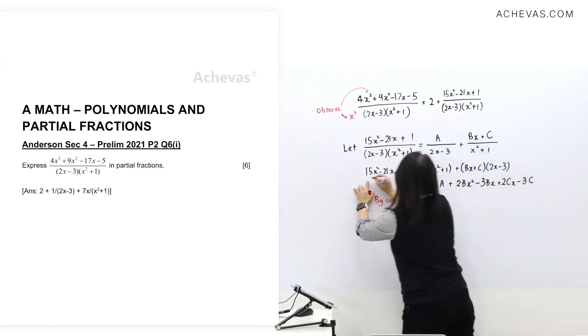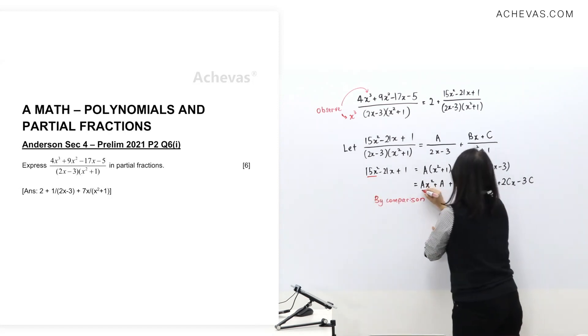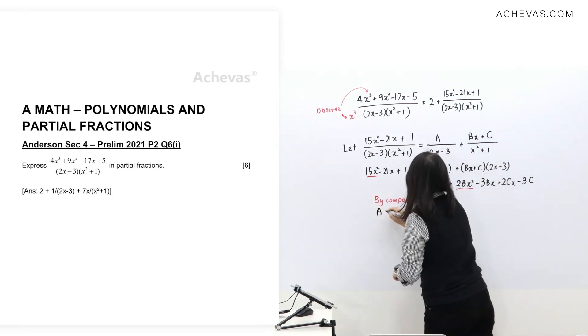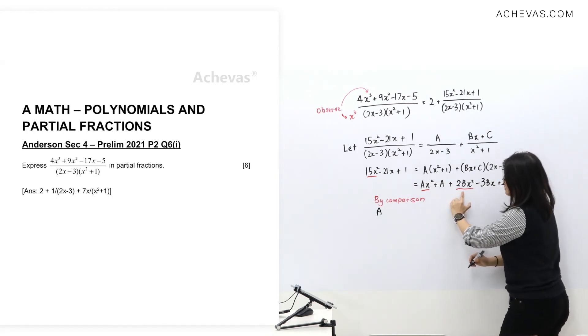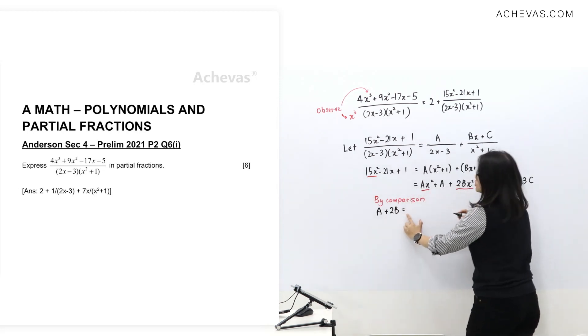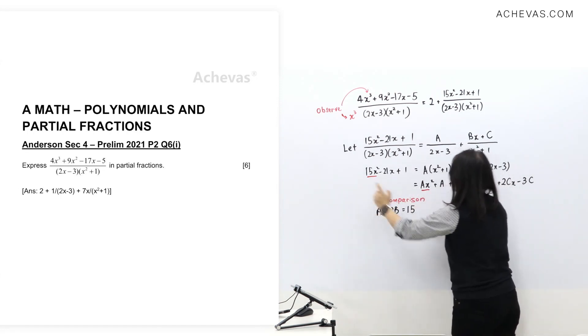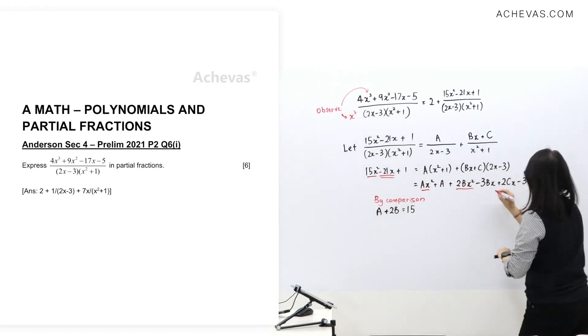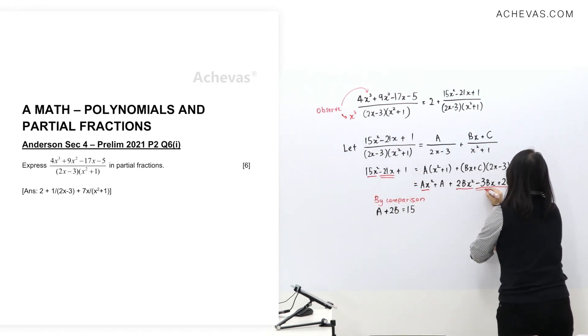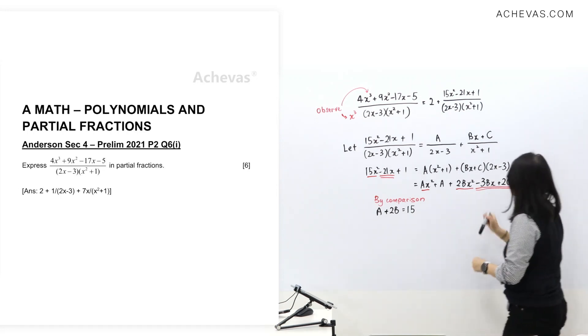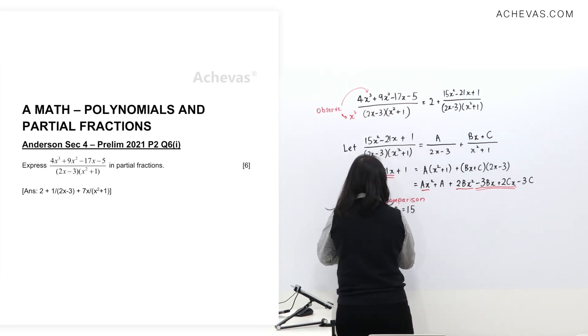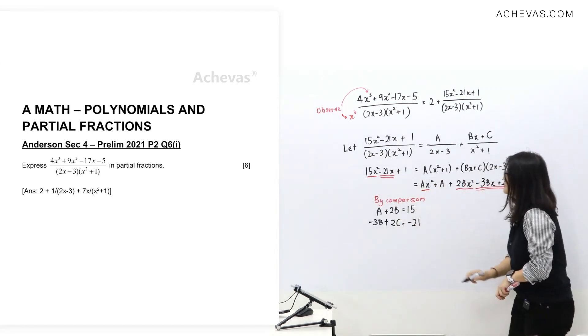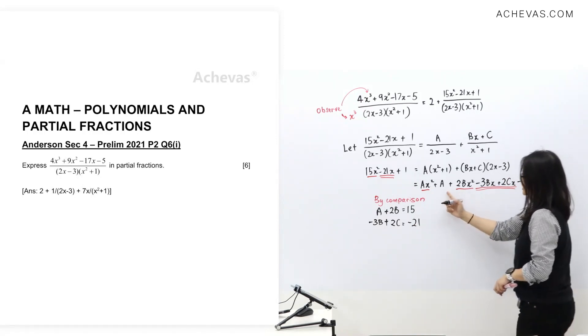Now we're ready to do comparison. We're going to compare x² terms. We have this one and this one. I'm taking the coefficient out, which is A from here. Coefficient here is A + 2B equals to x² term coefficient 15. Second, let's look at x term. We have -3B + 2C equals to -21. The leftover is the constant term: A - 3C equals to 1.